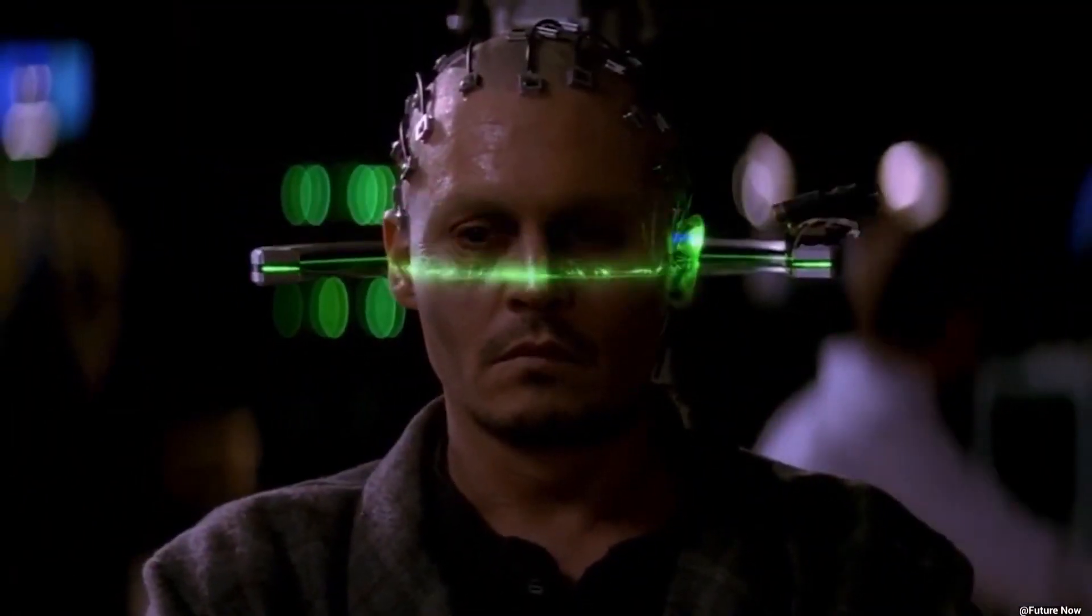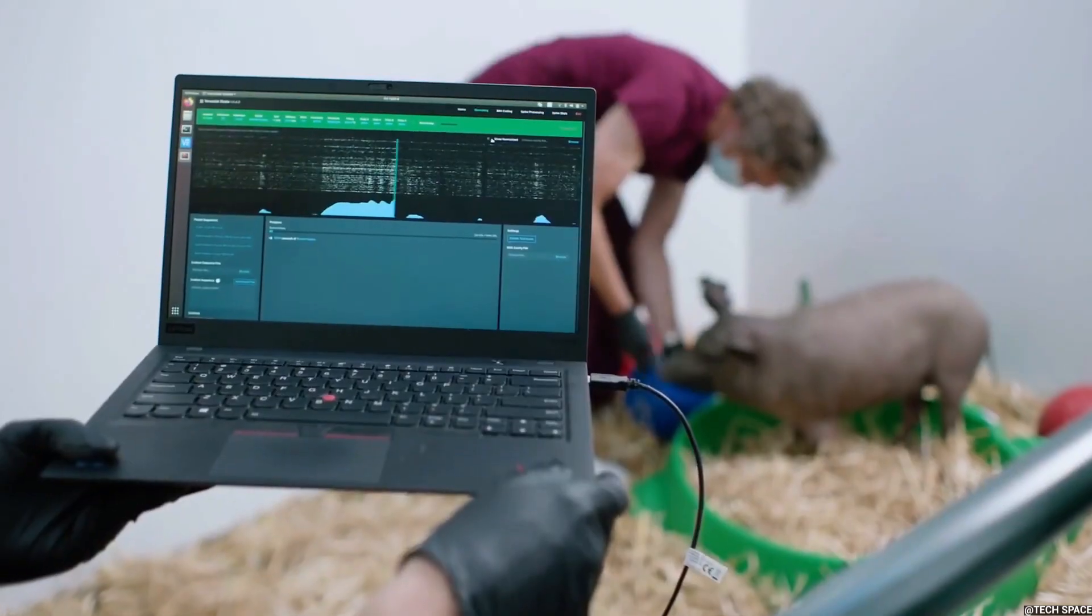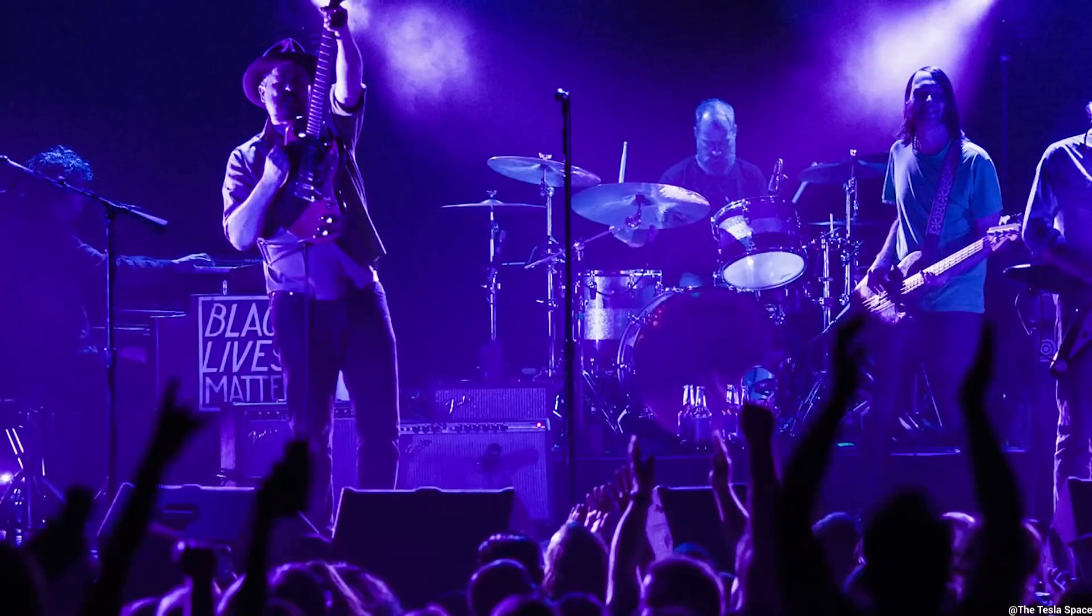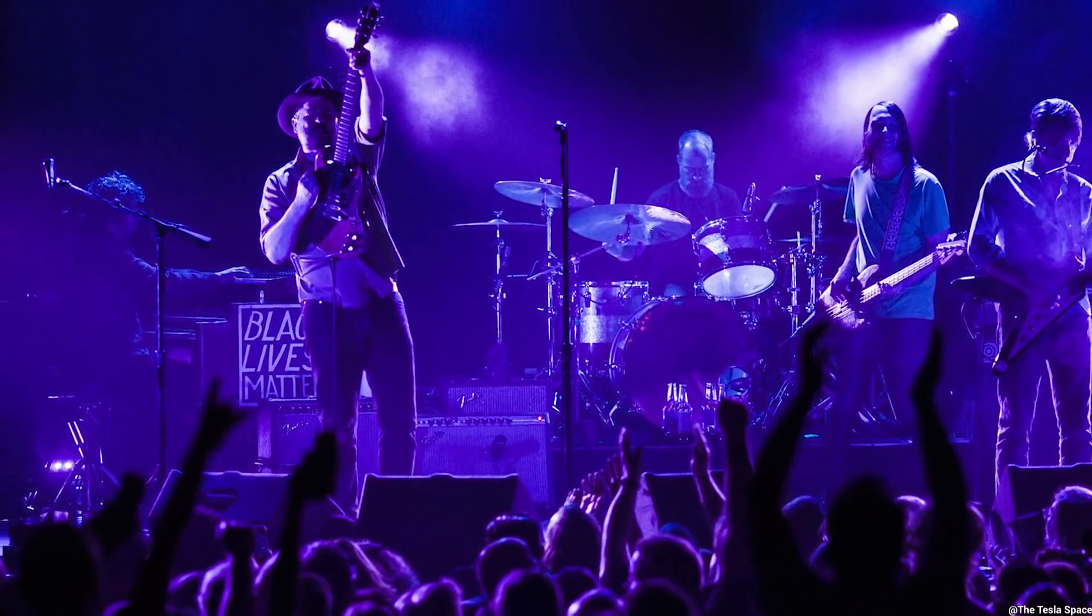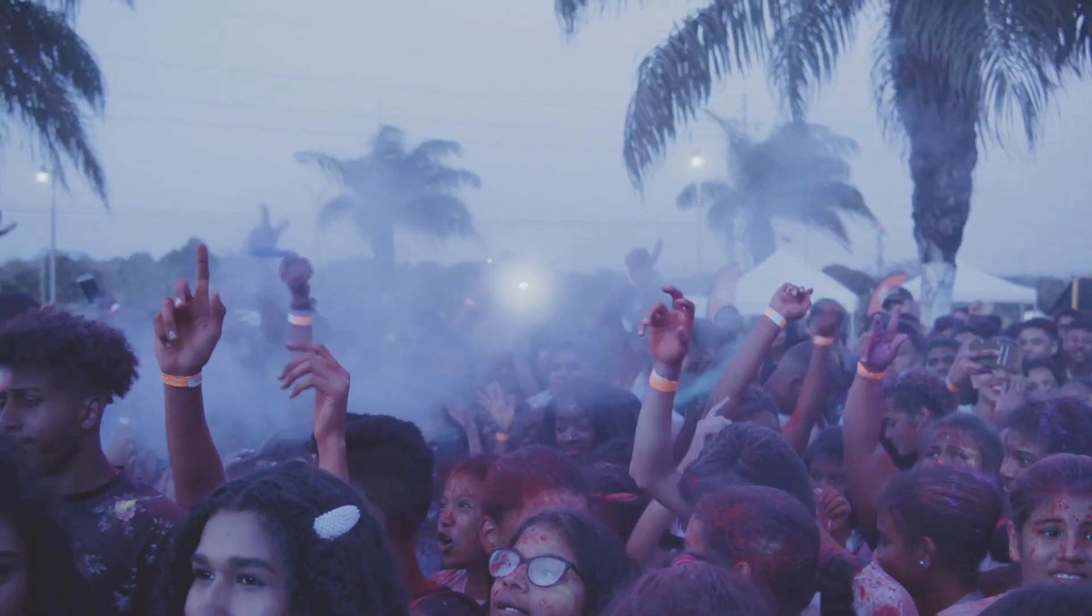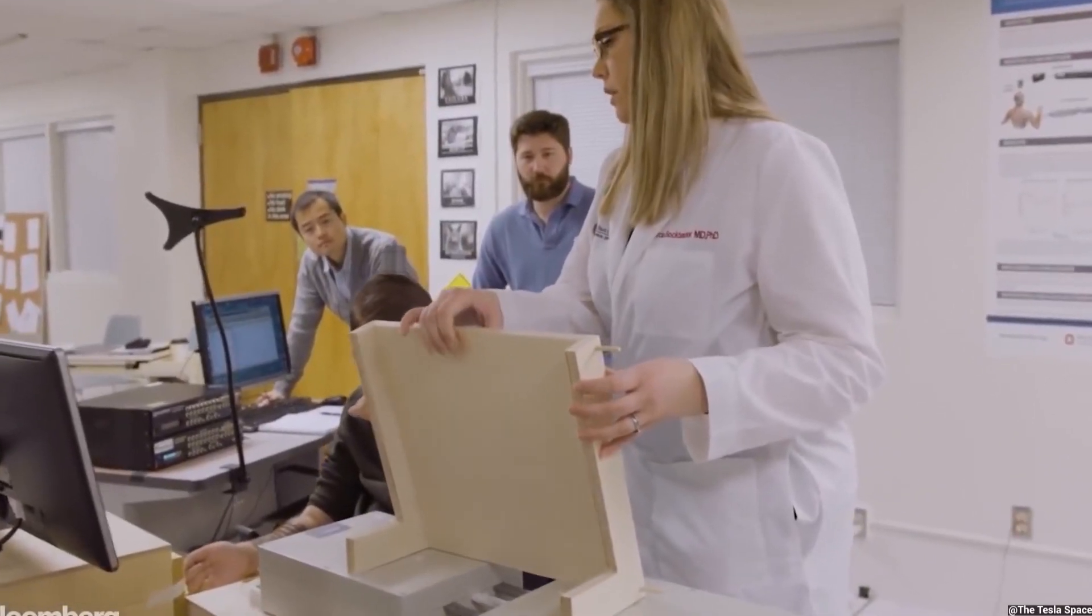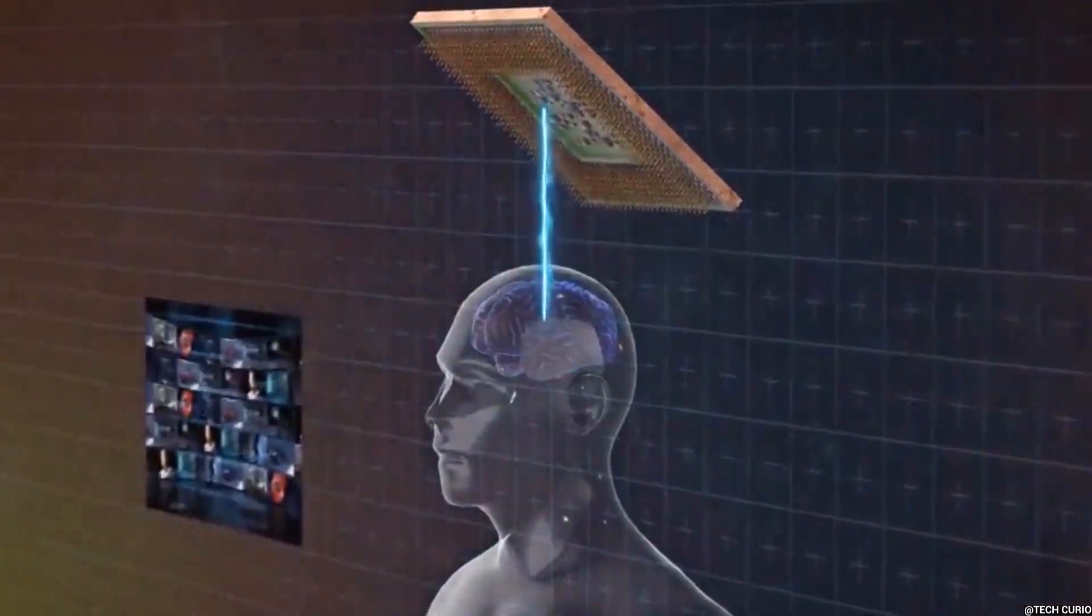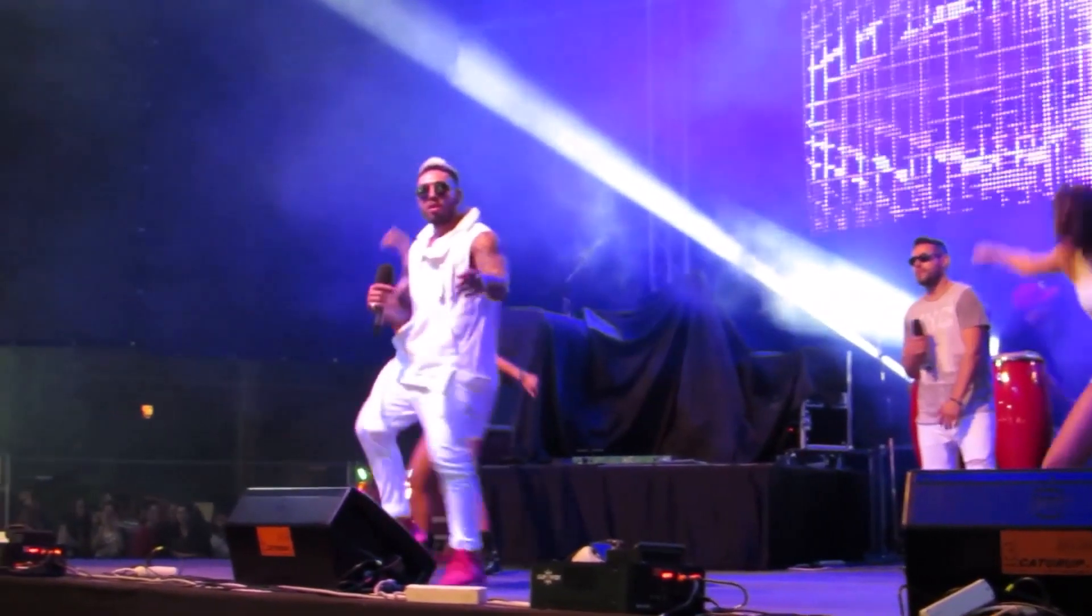You've definitely seen the non-invasive gadgets, which look like strange headgear with sensors all over. It can detect your brainwaves, however, with little clarity. Imagine you're standing across the street from a rock concert taking place inside an arena. You'd pick up enough of the music to realize that songs were being performed, but you wouldn't be able to identify the tune. Changing to an invasive BCI is like standing at the front row at a concert when all of the subtleties of the performance are amplified.